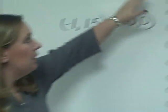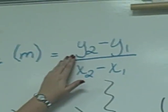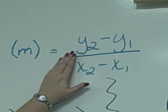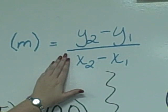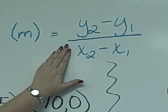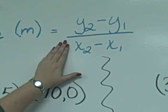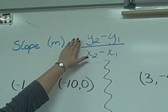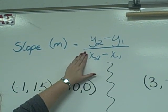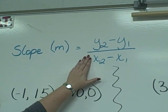This formula has the y's on top, and it's y sub 2 minus y sub 1 divided by x sub 2 minus x sub 1. If you remember from the previous lesson, that slope is always a fraction. In this formula we see it again as a fraction.